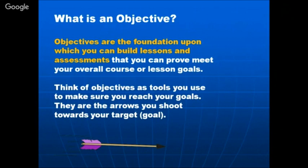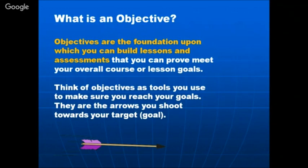Think of objectives as tools — they are the arrows you shoot towards the target. You have the goal clearly defined as the target, and the objectives are your bow and arrow to hit that target. Objectives are the means by which we achieve the end goal: each course goal contributes to the program objective, and course objectives and subject objectives help achieve that goal.